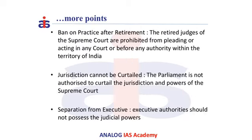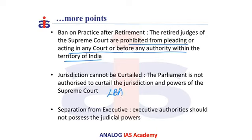The fifth point is the ban on practice after retirement — retired judges of the Supreme Court are prohibited from pleading or acting in any court or before any authority within the territory of India. The next point is that jurisdiction cannot be curtailed; Parliament has no right to curtail the jurisdiction of the Supreme Court, but can make a law to increase it, as was done through the 100th Constitutional Amendment related to the land boundary agreement with Bangladesh.